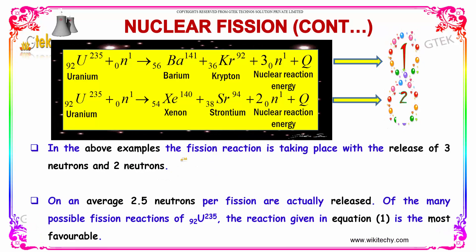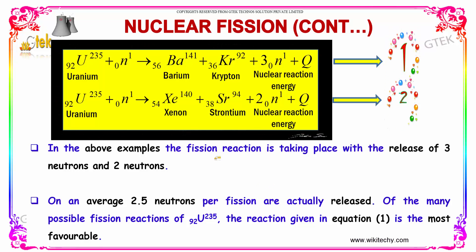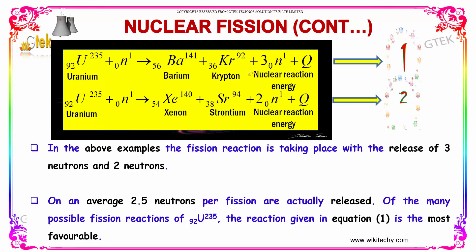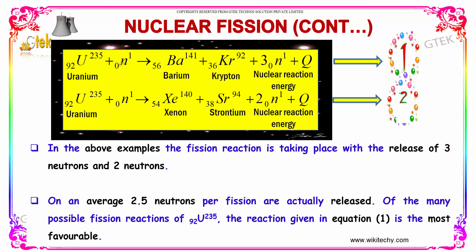In the above examples, the fission reactions release three neutrons and two neutrons respectively. On average, 2.5 neutrons per fission are actually released across the many possible fission reactions of Uranium-235. The reaction producing barium and krypton is the most favorable one, occurring most frequently.